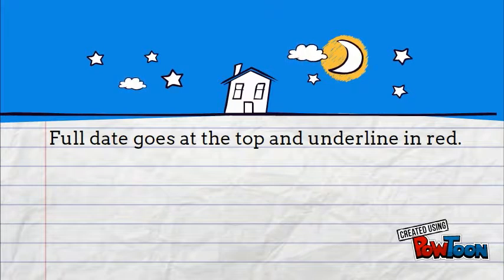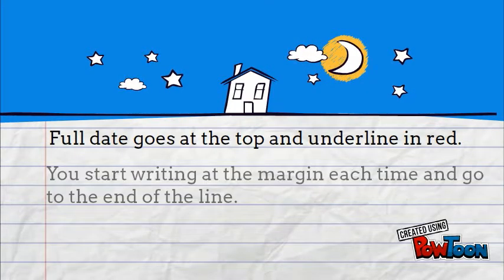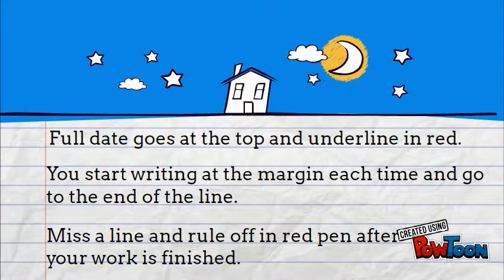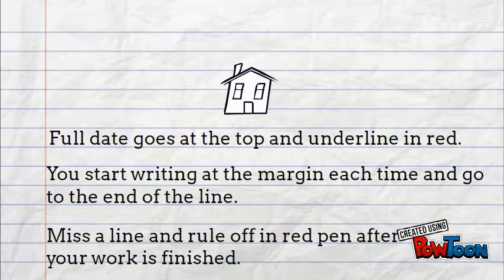The full date goes at the top and is underlined in red. You start writing at the margin each time and go to the end of the line. Miss the line and roll off in red pen after your work is finished.